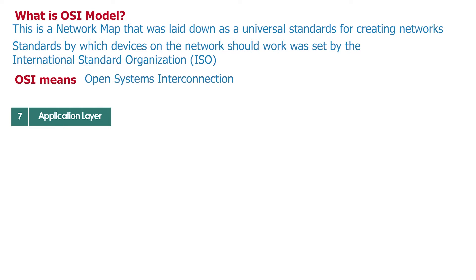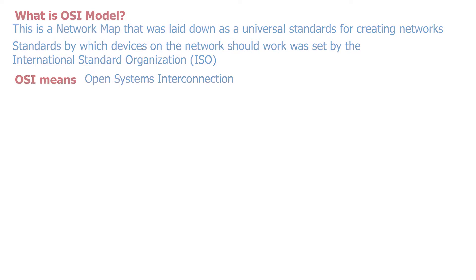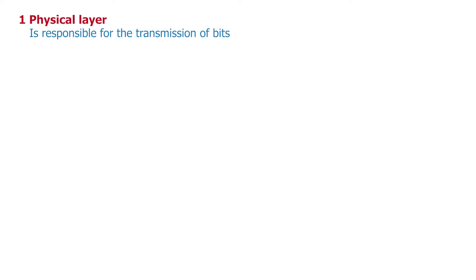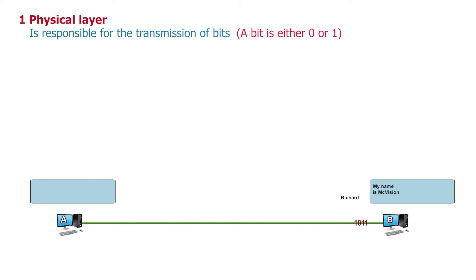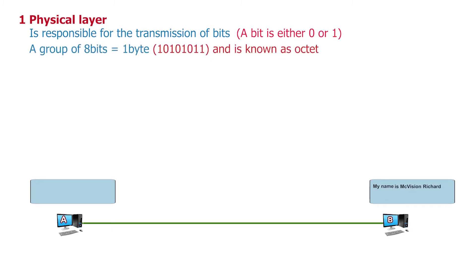The first layer is called the physical layer. This layer is responsible for the transmission of bits. A bit is either zero or one — that is the basic language a computer understands. As discussed in our previous lessons, if host A sends data to host B, this data is transmitted in the form of zeros and ones, which are called bits. A group of eight bits equals one byte and is known as an octet. A group of four bits is called a nibble.